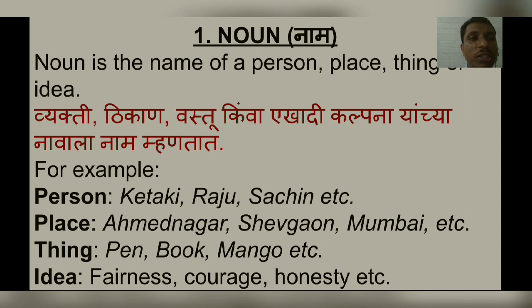First, noun. A noun is the name of a person, place, thing, or an idea. For example, person — like Kitaki, Raju, Sachin, etc.